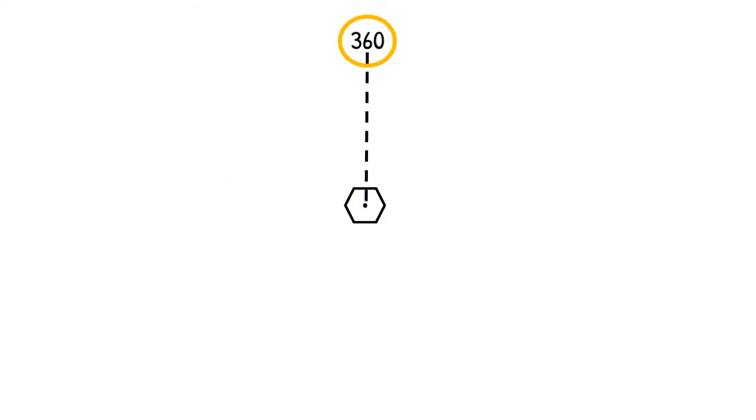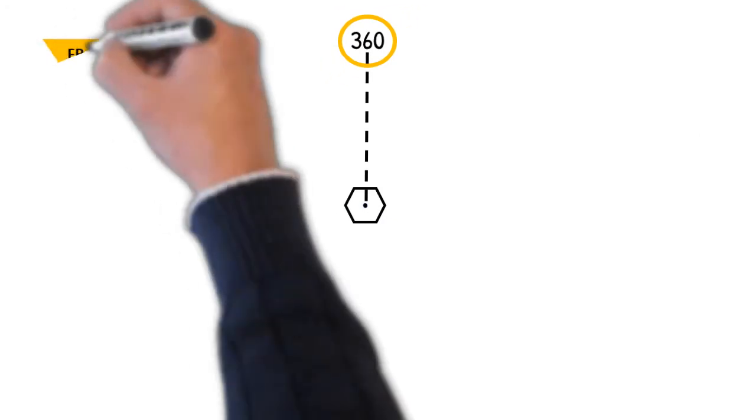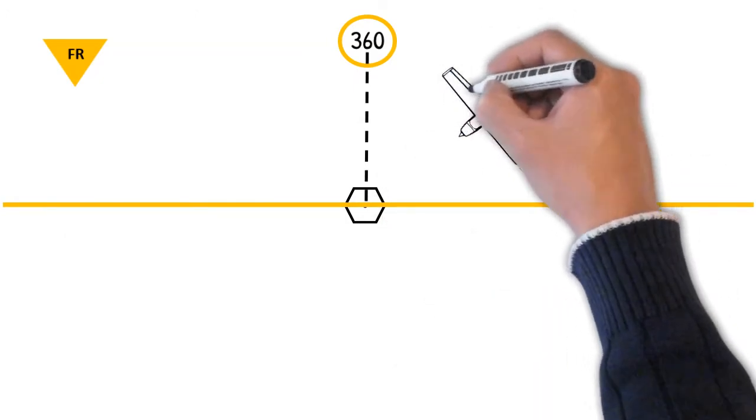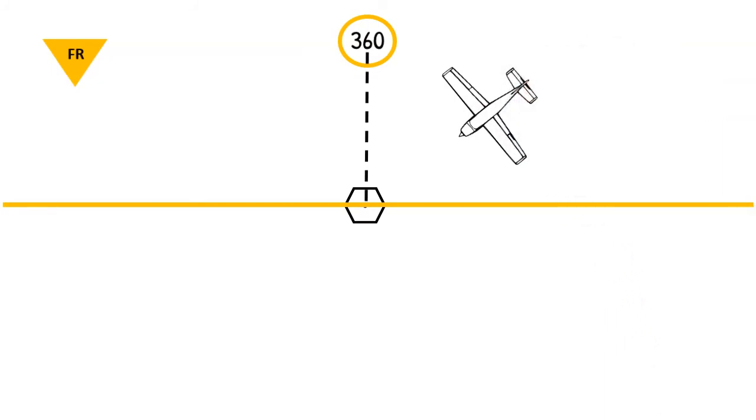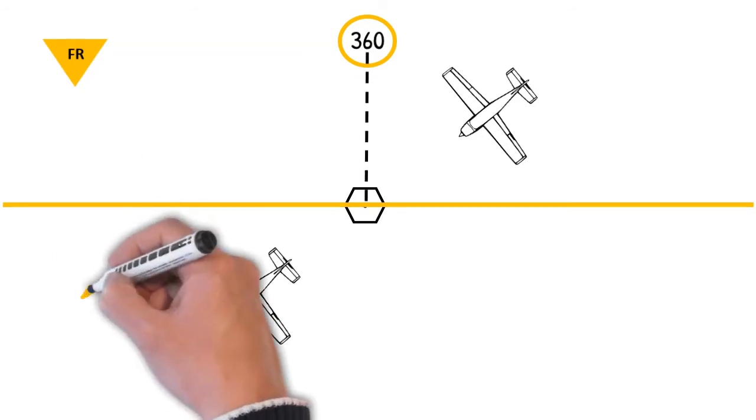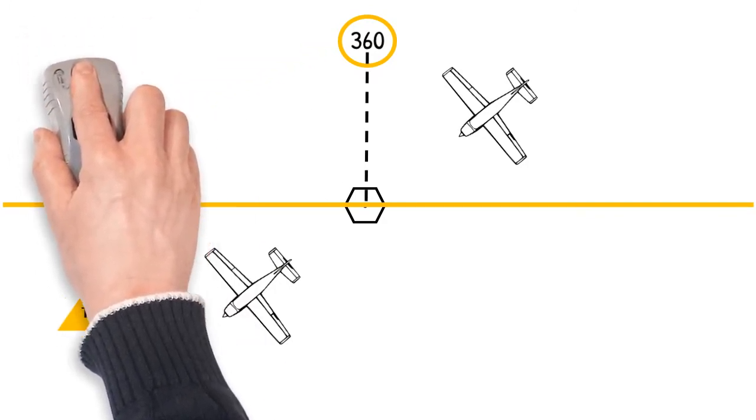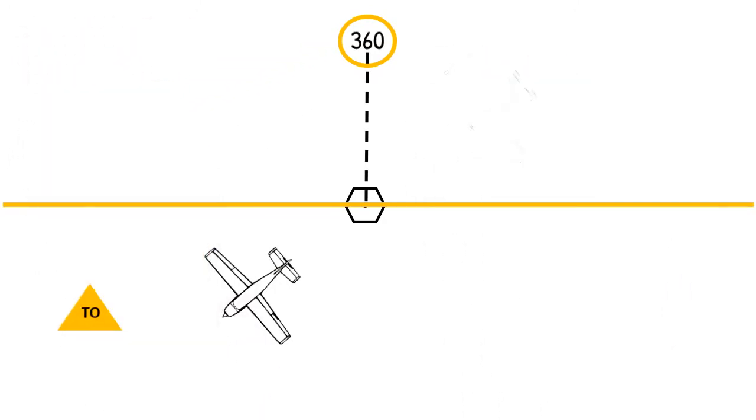Now in this one example, we're going to continue to use 360 on the OBS. We've got a FROM flag being displayed on the CDI, which means we're in that area where the radial extends from the VOR in the direction of 360. In this example, we're flying southwest. And if we continue flying southwest, disregarding the CDI needle swinging back and forth as we cross the VOR or go south of that yellow line, at some point, we're going to enter the area where the TO flag will become activated, demonstrating that we need to do something to get back to the area where the 360 radial exists from the VOR extending northbound.